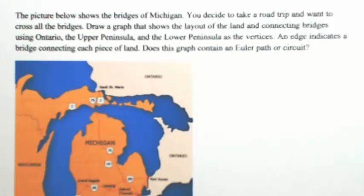The picture below shows the bridges of Michigan. You decide to take a road trip and want to cross all the bridges. Draw a graph that shows the layout of the land and connecting bridges using Ontario, the Upper Peninsula, and the Lower Peninsula as your vertices. An edge indicates a bridge connecting each piece of land. So once we do this, we're going to figure out if this graph has an Euler path or a circuit.